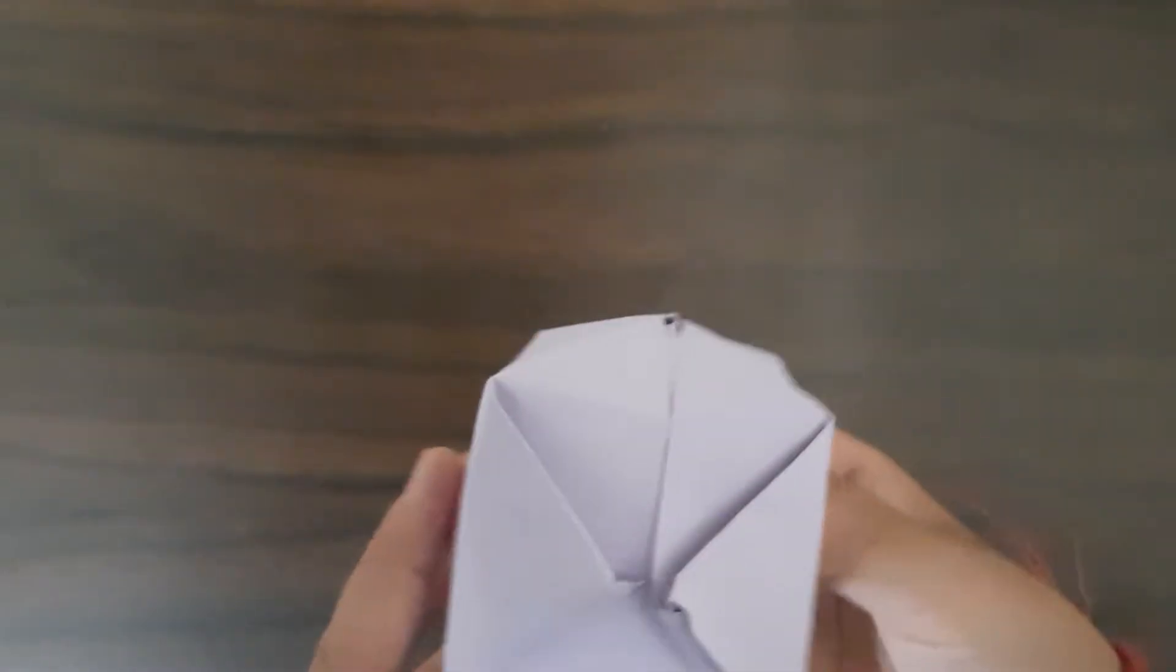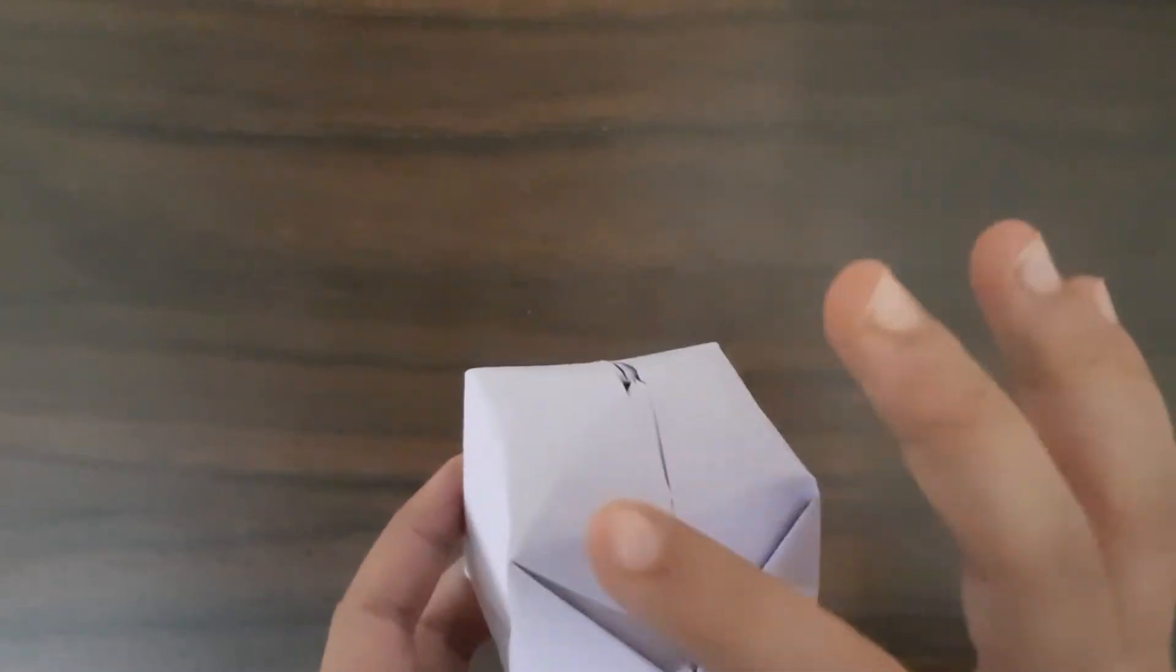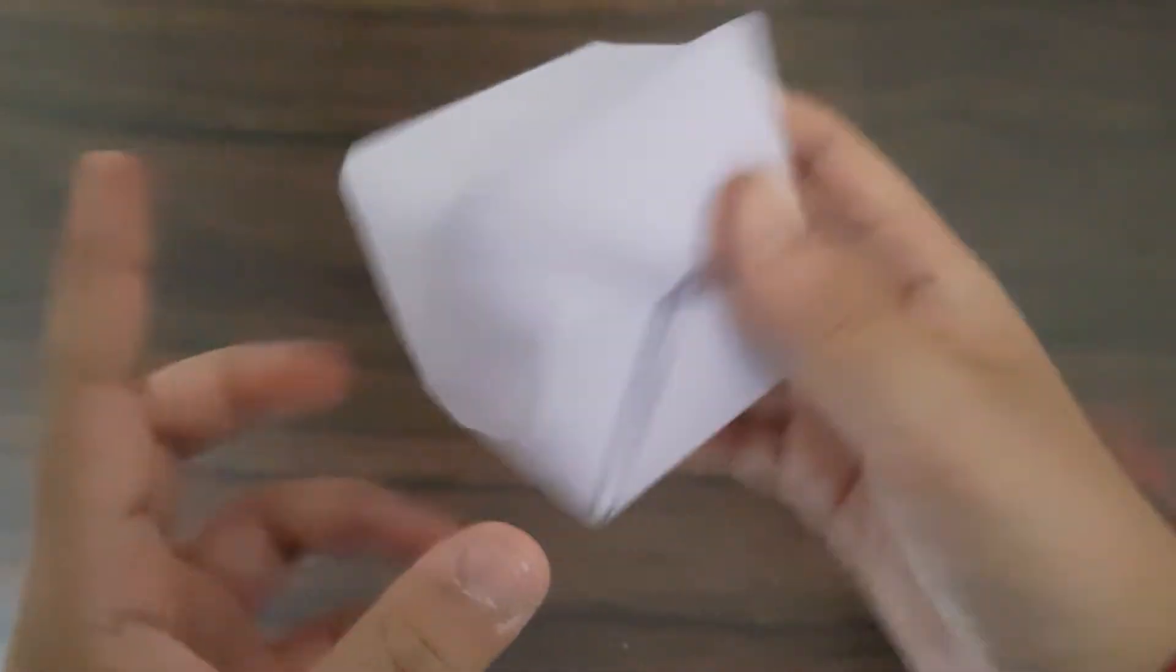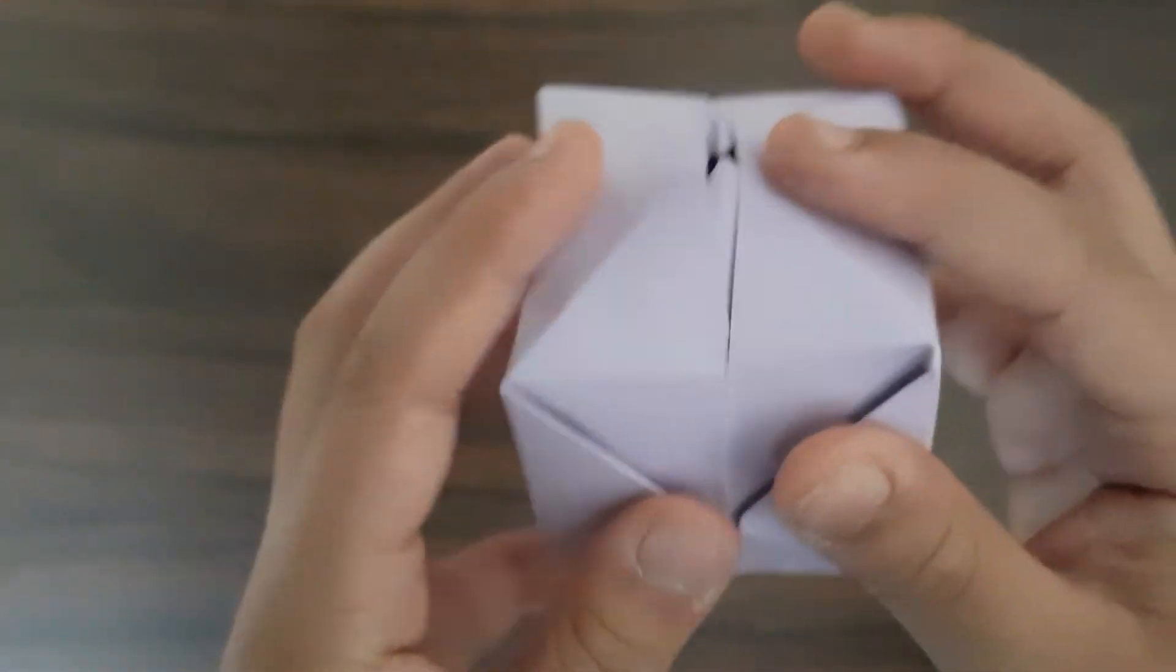So if you take an inflated water bomb, it will look something like this. There will be four points on the top and four points on the bottom. All we need to do is make the cube.